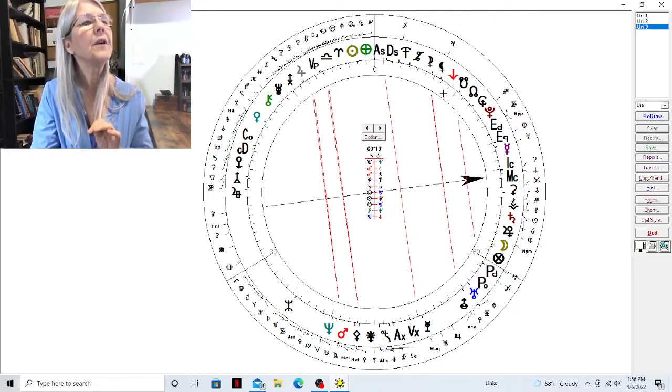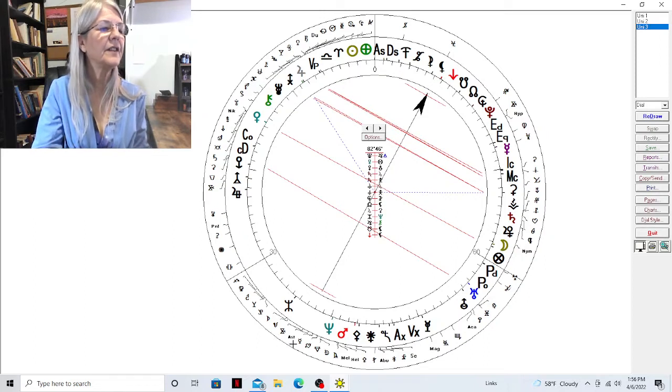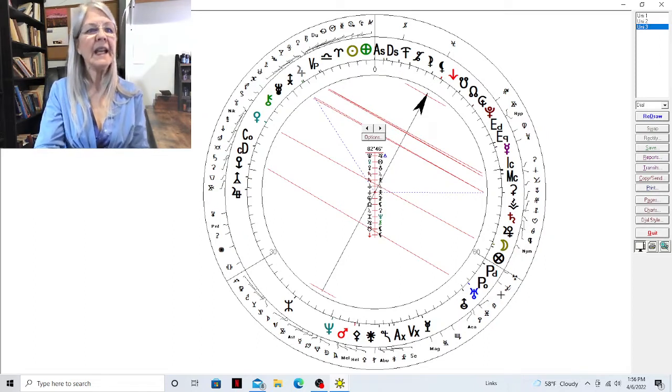I'm going to do the 23 again. It doesn't really change anything. Again, you see Laetitia, Asteria. So in any event, hopefully that was informative.